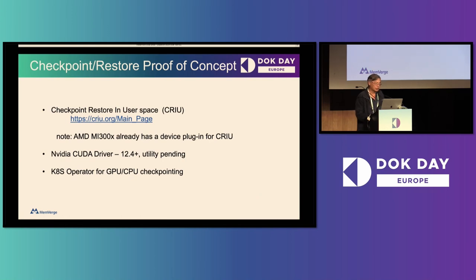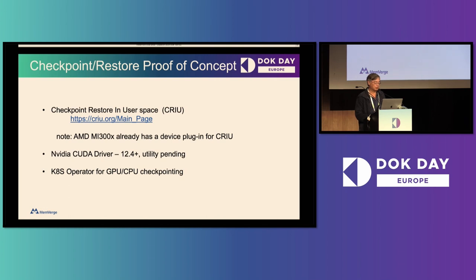The way we did this is we started off by using CRIU, an open source project that came about around 2012 and is currently in alpha/preview mode on Kubernetes 1.25 for forensic container analysis. We started with CRIU and built on top of that. There's also a GPU from AMD that already has a device driver plugin for CRIU.